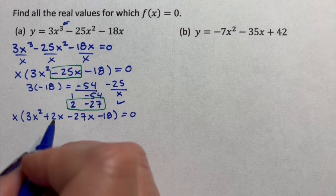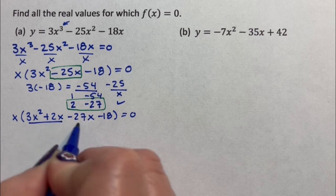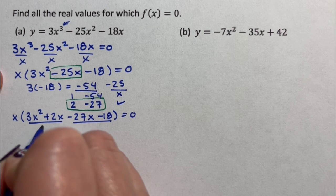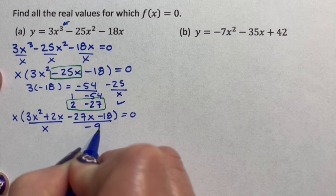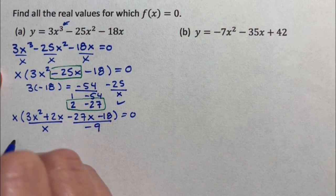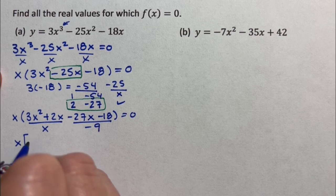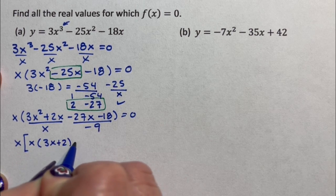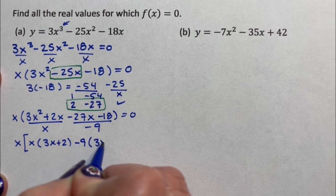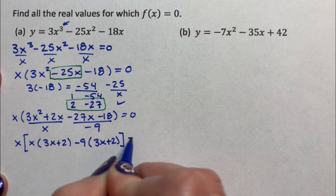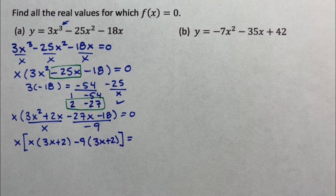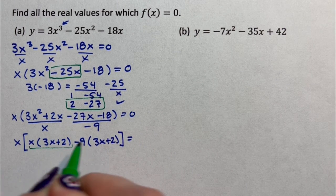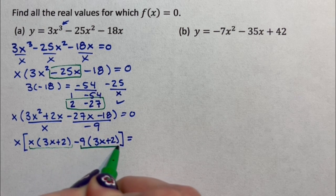They are equivalent. I can now factor by grouping because anytime you have an even number of terms, you can factor by grouping. I can take an x out of my first two terms and a -9 out of the second two terms. If I take out an x, I have 3x + 2. If I take out a -9, I have a 3x + 2. I still have two terms. It is always good to double check the number of terms you have. I have a term here, one term. I have a term here, two terms.